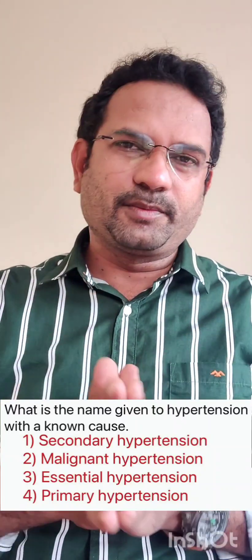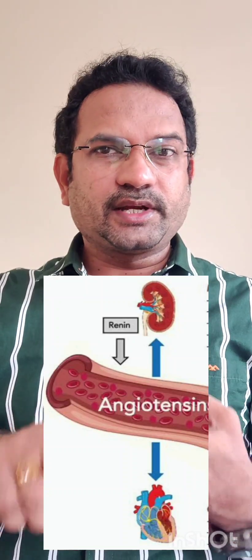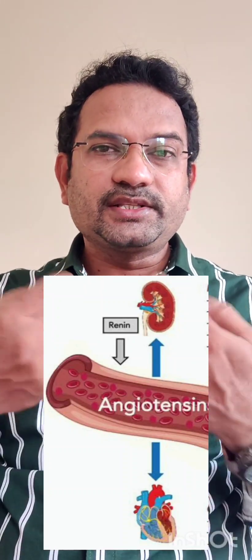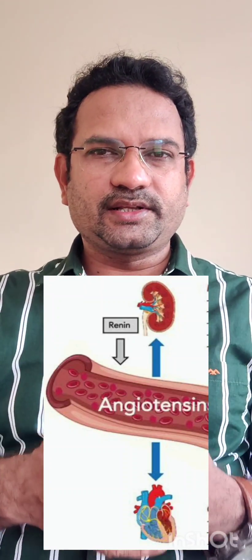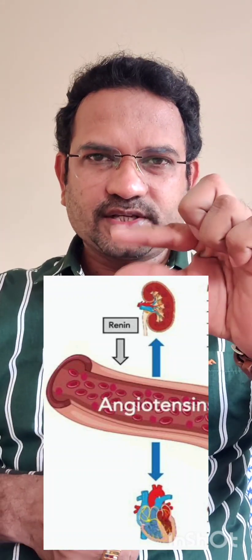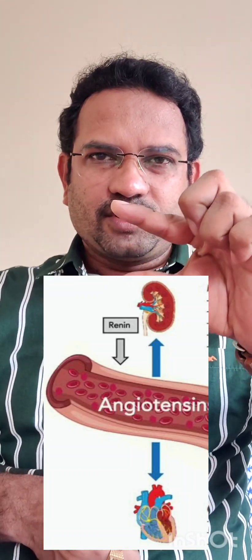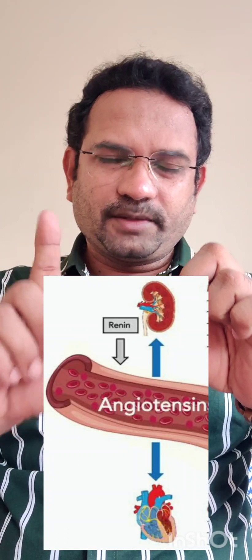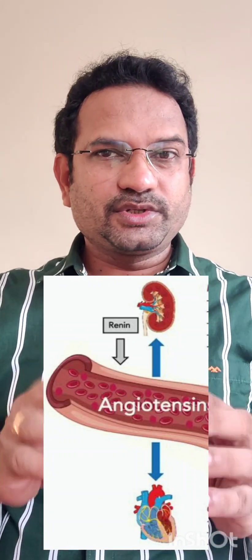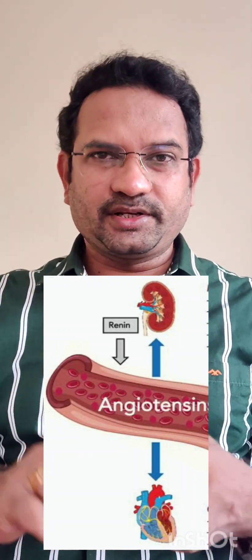Let us understand a little more about secondary hypertension. What happens when kidney disease is present? During kidney disease, renin levels increase. If renin is increased, angiotensin levels also increase. 'Angio' means blood vessel and 'tension' means causing contraction. When the blood vessel is contracted, blood pressure increases. So any kind of kidney disease mostly results in hypertension.